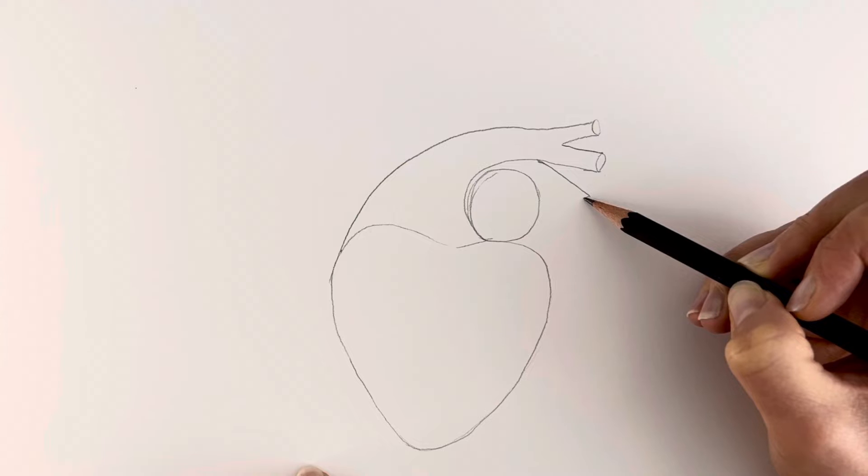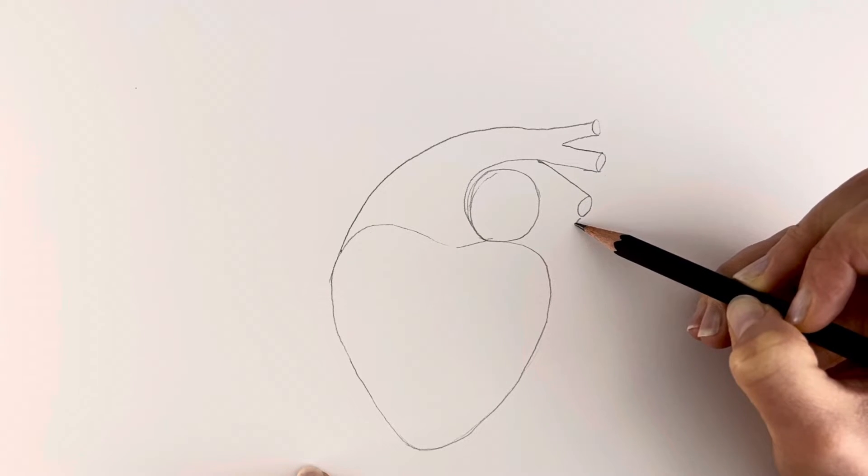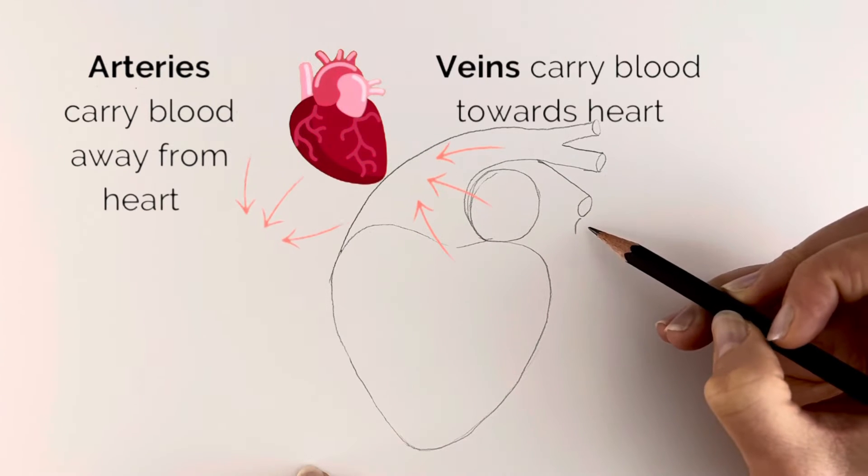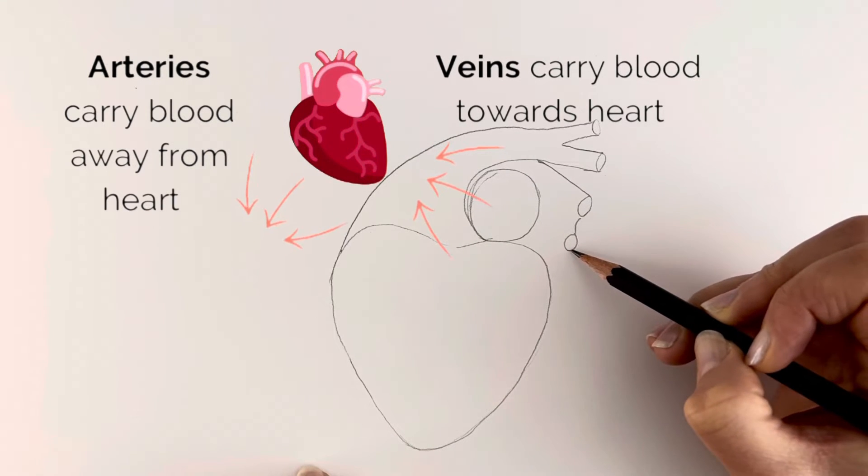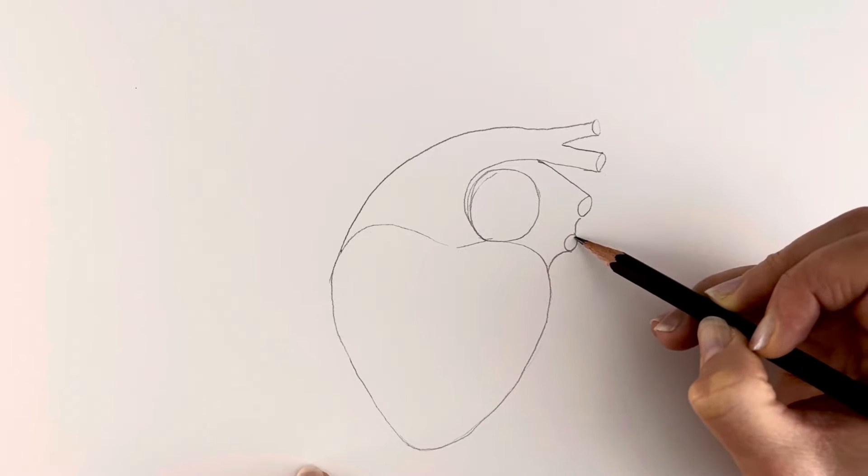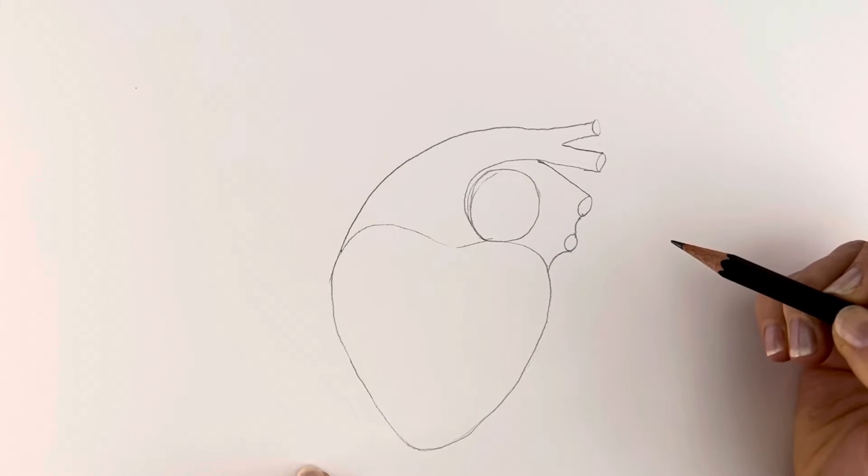So I can hear you going, what's the difference between arteries and veins? Well I will tell you. Arteries carry blood away from the heart and veins carry blood towards the heart. That's the difference. There we go. So that's that one.